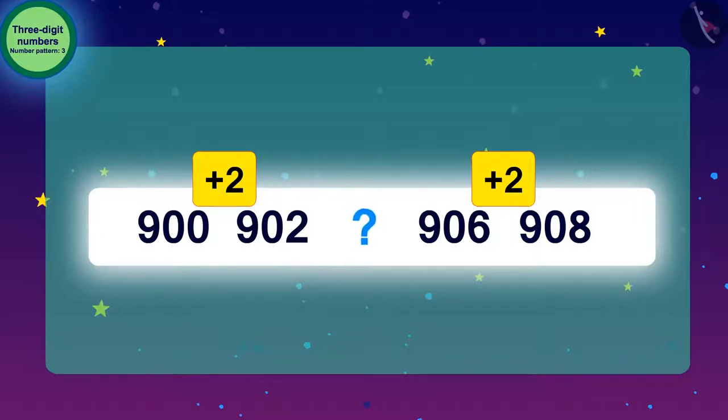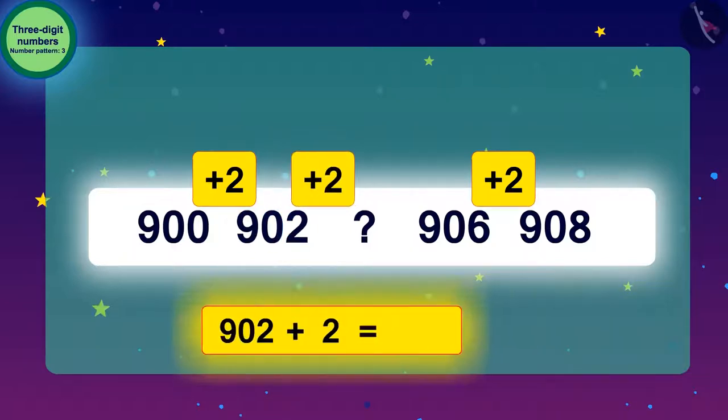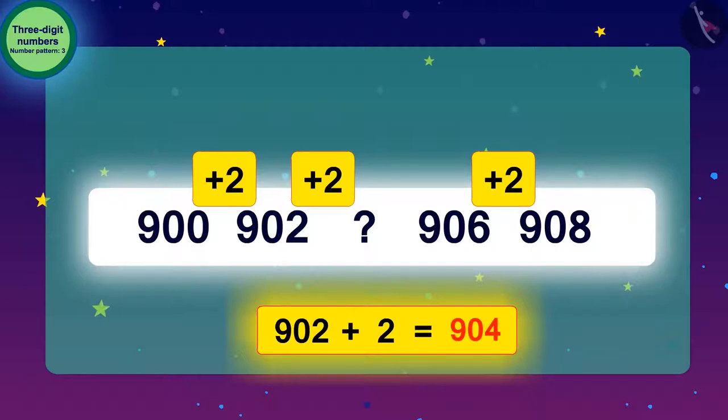To get the next number of the code, we will add 2 to 902. By adding 2 to 902, the next number we get will be 904. Our first pattern is complete.